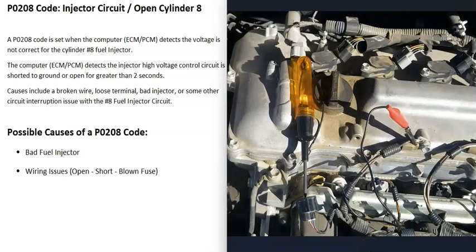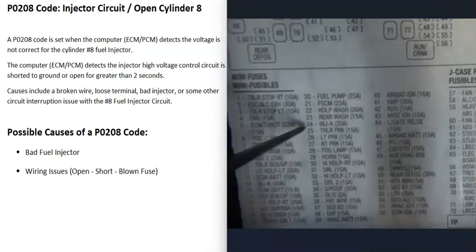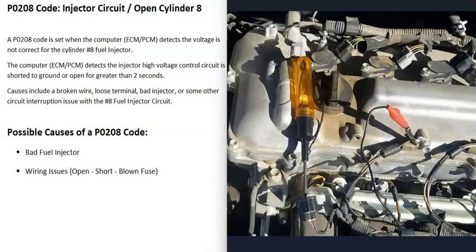The next possible cause is some kind of wiring issue going to cylinder number eight — any kind of open, short, or blown fuse can cause problems. It's a good idea to check any injector-related fuses and make sure none are bad. Usually a bad fuse will affect other cylinders too, so you'll be getting other codes. It's always a good idea to get wiring diagrams and schematics for your particular vehicle.